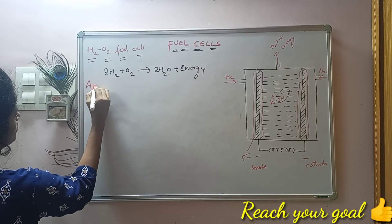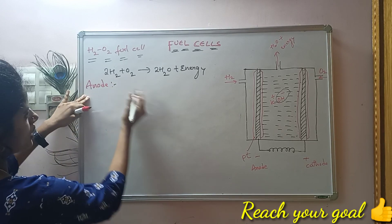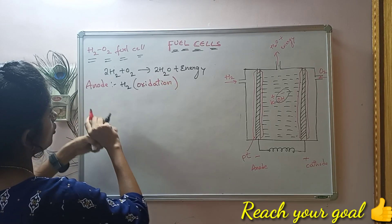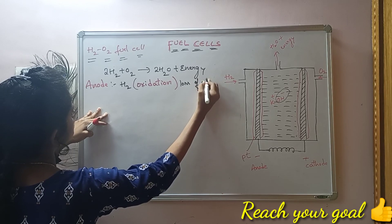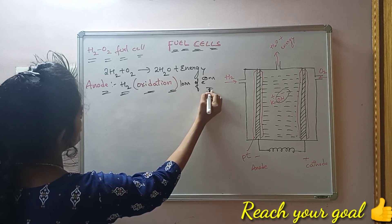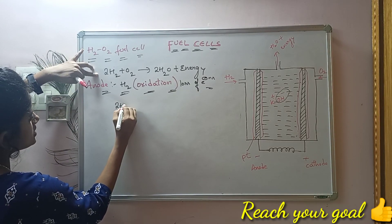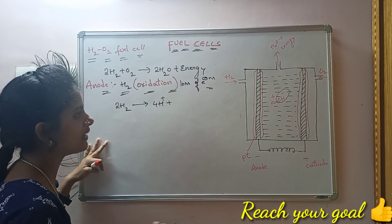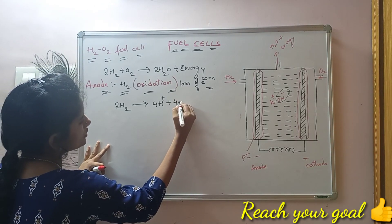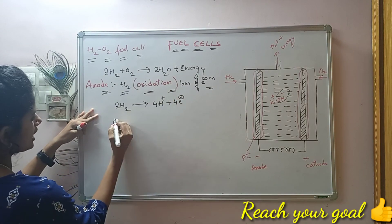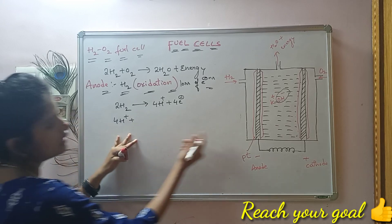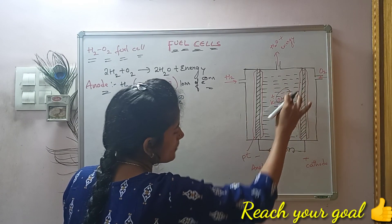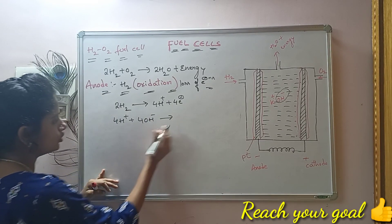At the anode, oxidation takes place. Oxidation means the loss of electrons. In two molecules of hydrogen, 4H⁺ ions plus 4 electrons are produced. In the second step, with KOH solution as the electrolyte, K⁺ and OH⁻ ions are separated. The 4 OH⁻ ions react with the 4H⁺ to give 4H2O — that is, 4 water molecules.